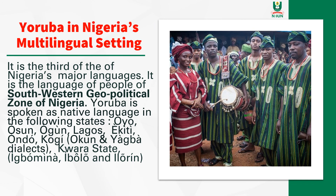Let's look at Yoruba language in multilingual settings. It is the third of the three major Nigerian languages, the language of the people found in the southwestern region of Nigeria. It is spoken as the native language of people in Oyo, Osun, Ogun, Lagos, Ekiti, part of Kogi — where Okun and Yagba people use Yoruba — in Ondo states, and in Kwara state among the Igbomina, Igbolo, and Ilorin communities.